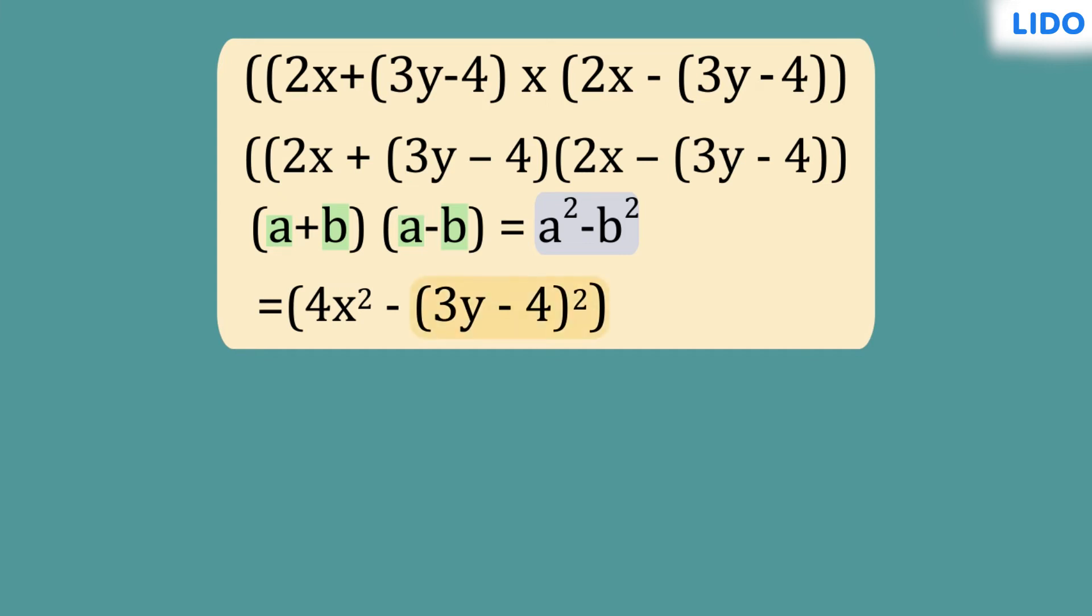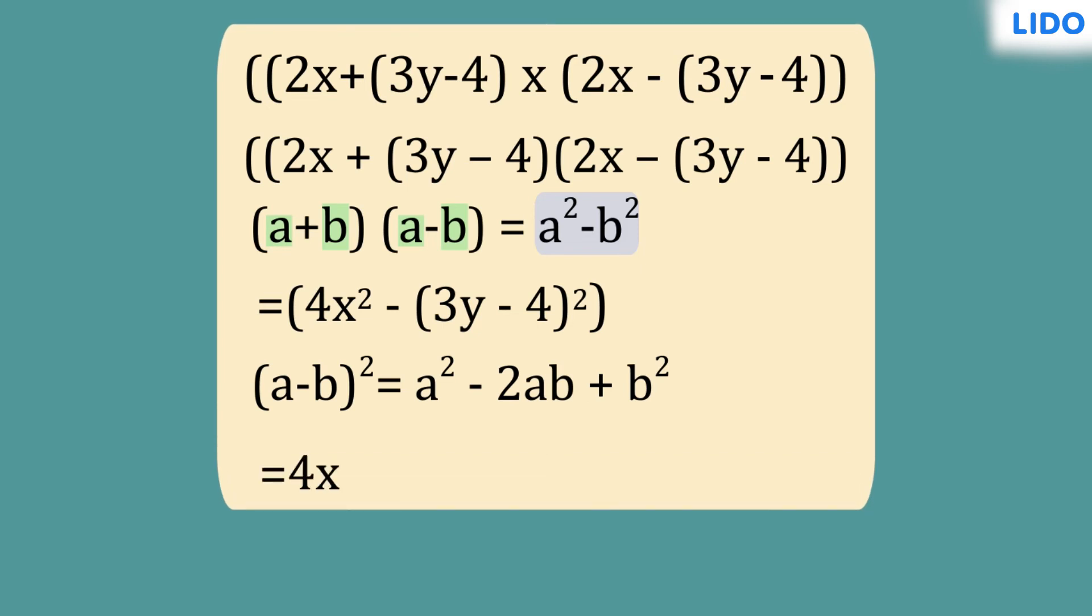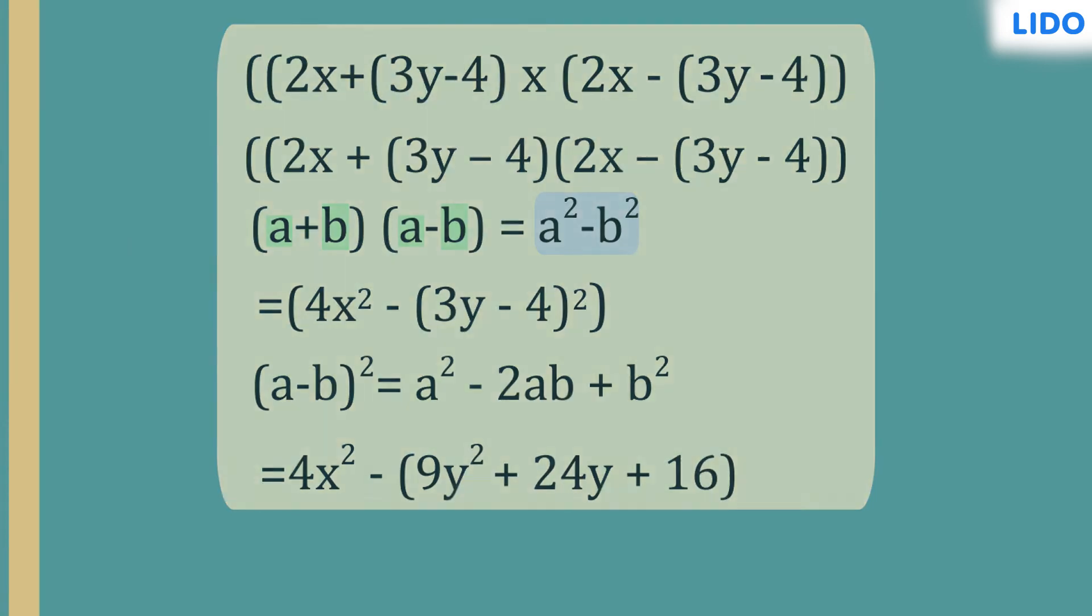To do that, let's apply the identity a minus b the whole square equals a square minus 2ab plus b square. Hence, the final answer is 4x square minus 9y square plus 24y plus 16.